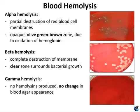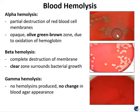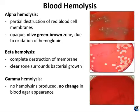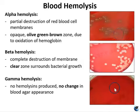Alpha hemolysis is the partial destruction of red blood cells, producing a greenish-brown discoloration of the agar around the colonies — it makes the media look like a bruised apple. Beta hemolysis is the complete destruction of red blood cells and hemoglobin, resulting in a clearing of the media around the colonies — you can see right through a beta hemolysis plate. Gamma hemolysis is actually no hemolysis at all; it's negative, appearing as simple growth with no change to the media. Both alpha and beta results are considered positive for hemolysis, whereas gamma is negative.